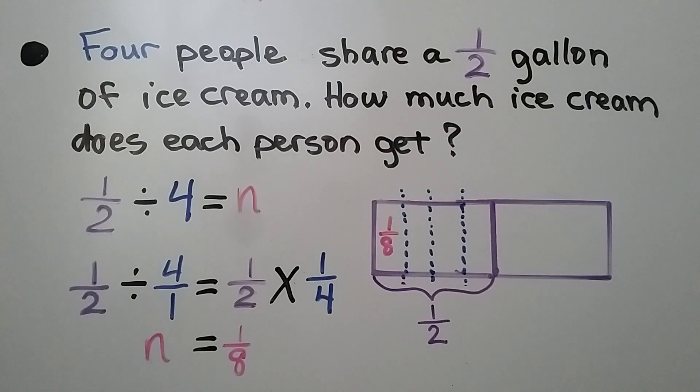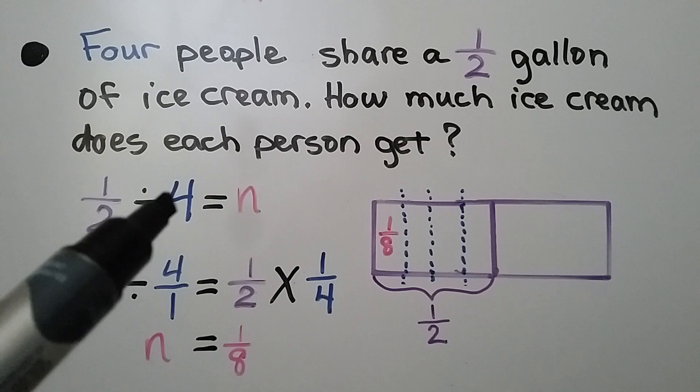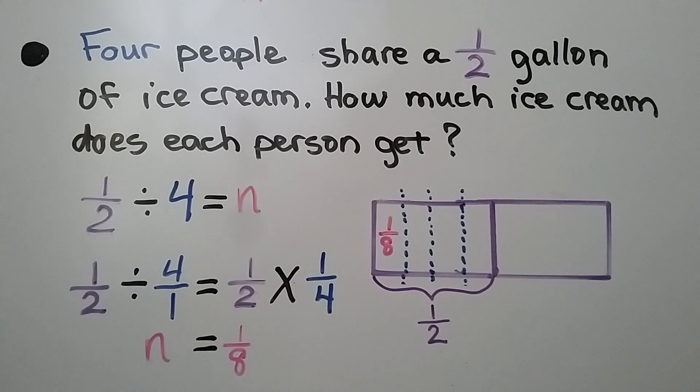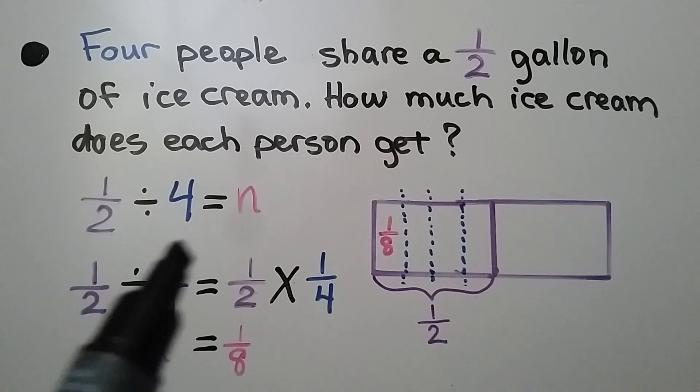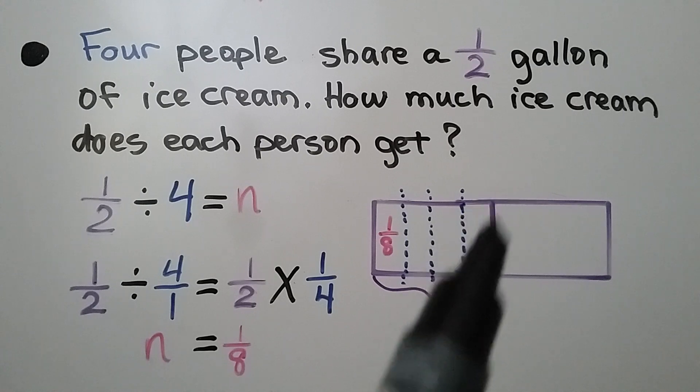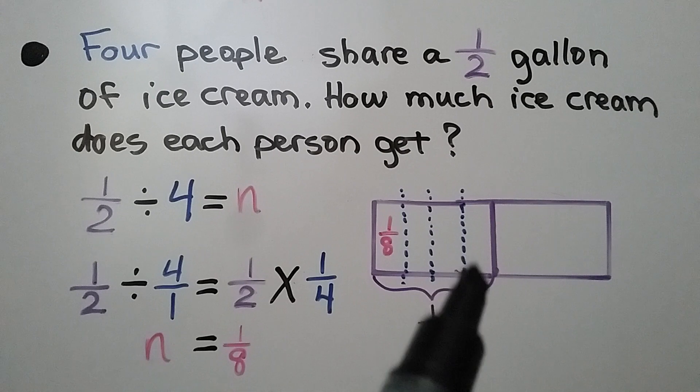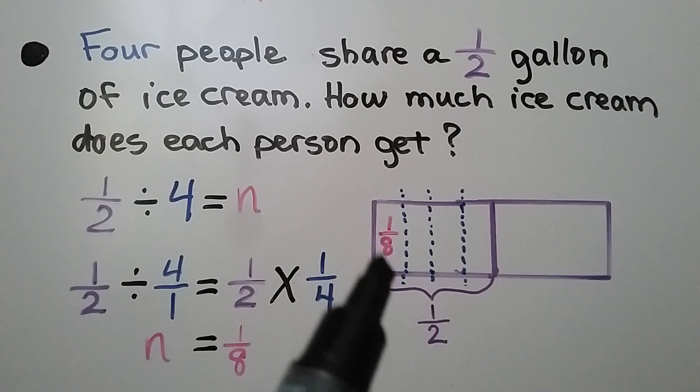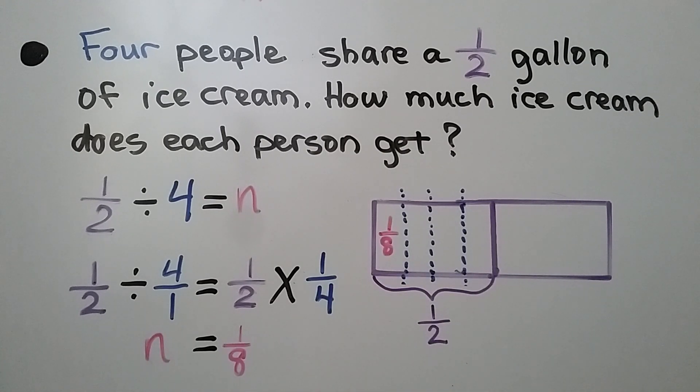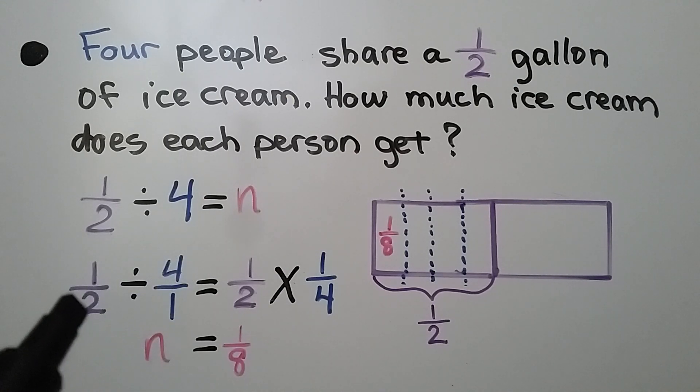Four people share a half gallon of ice cream. How much ice cream does each person get? So we have one half gallon of ice cream split between 4 people. So 1 half divided by 4 is equal to n. We need to find the value of n. We have one whole rectangle, and it's split in half. Then this half is split into 4 equal sized pieces. And each one would be 1 eighth of the entire rectangle.